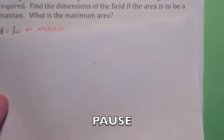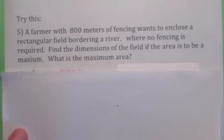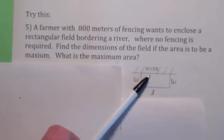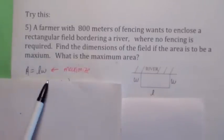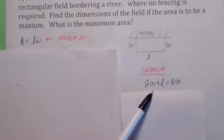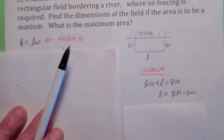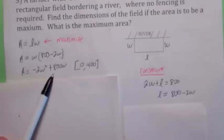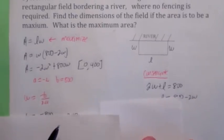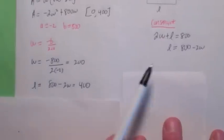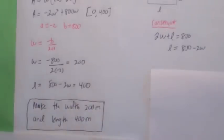I'll give you one to try. This is a nice little twist on our theme — you have a river here, so you don't have to put a piece of fencing along the river. You still want to maximize the area, but the constraint equation, the way I labeled it, is 2w plus 1l equals 800. Solving for l gives 800 minus 2w. Substituting back into the area function and finding the vertex: w equals negative b over 2a gives w equals 200. Then l equals 800 minus 2 times 200, which is 400. So the width is 200 meters and the length is 400 meters.